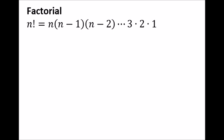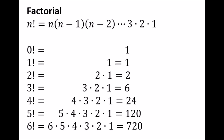You may remember factorials from high school. A factorial is defined as a number multiplied by every other number less than it, stopping at one. Zero factorial is defined as one. The first six factorials are shown below that.